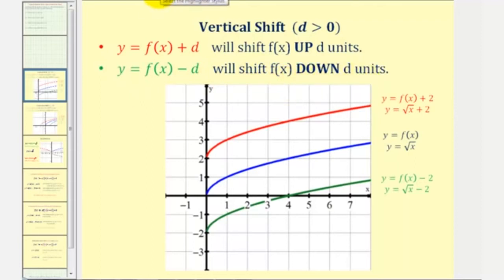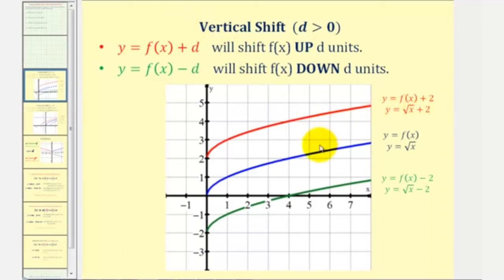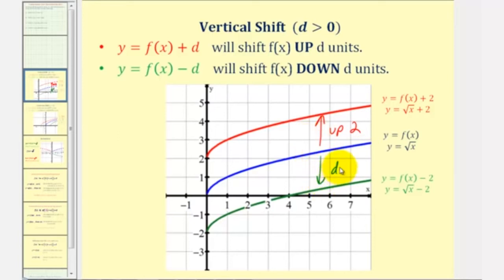Considering the basic square root function graphed here in blue, where we have y equals square root of x: if we have y equals the square root of x plus two — notice the plus two is not underneath the square root — this would shift our function up two units. And if we have y equals the square root of x minus two, this would shift the basic square root function down two units.